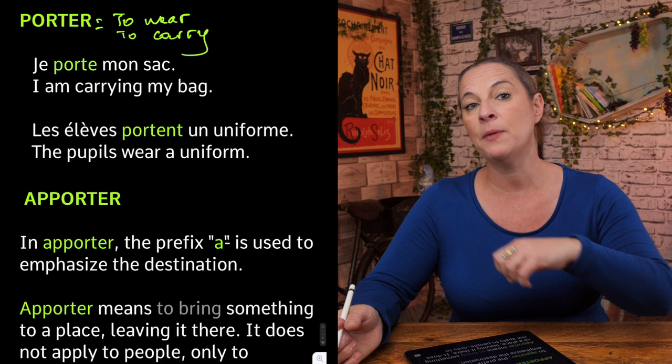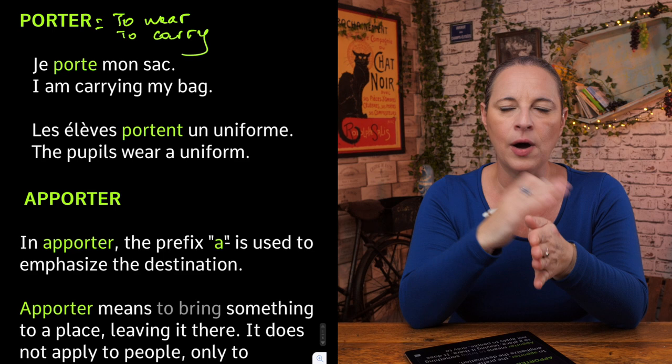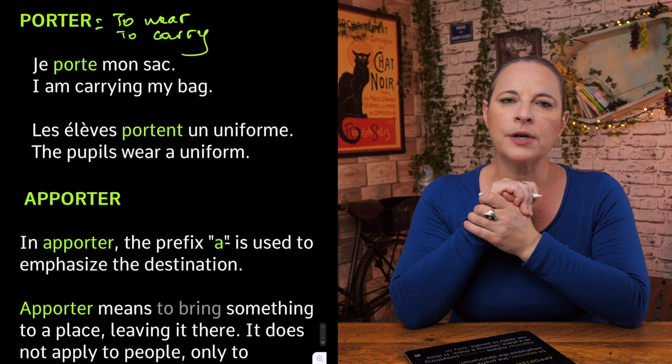Remember, in the present tense in French we use only one form — just like 'I carry' or 'I wear', not 'I'm carrying' or 'I am wearing'. There is no -ing form in French.